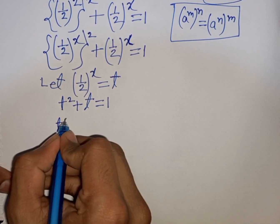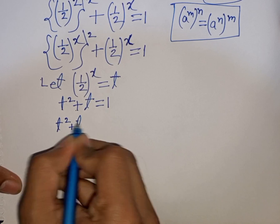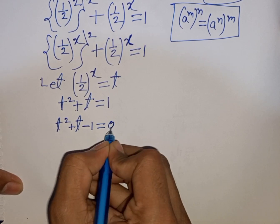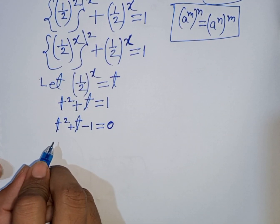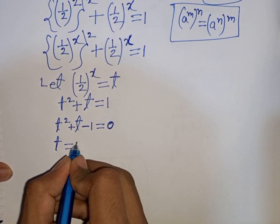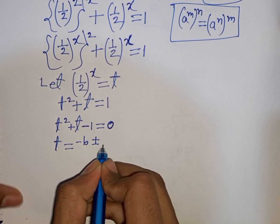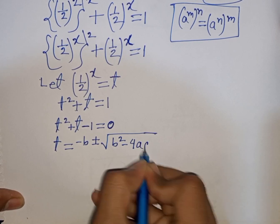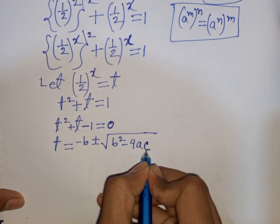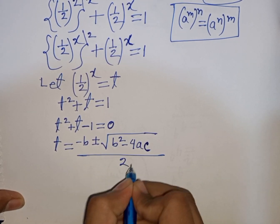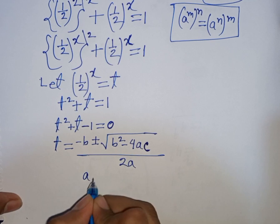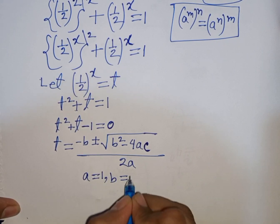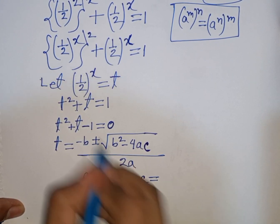We can write t squared plus t equals 1. Moving 1 to the left side gives t squared plus t minus 1 equals 0. Now we apply the quadratic formula. Here a equals 1, b equals 1, and c equals negative 1.